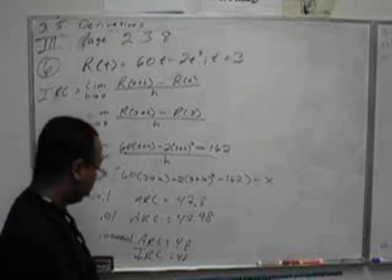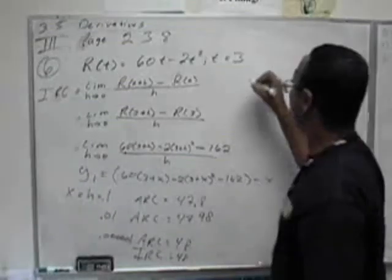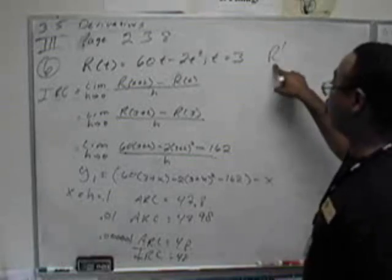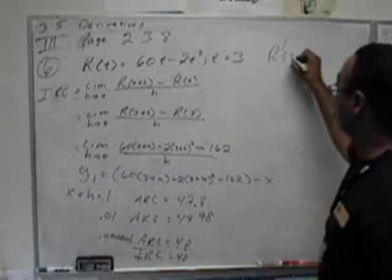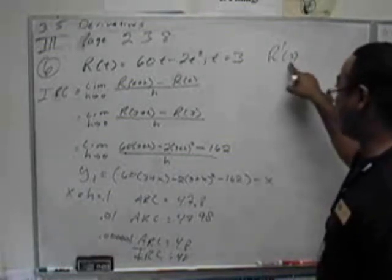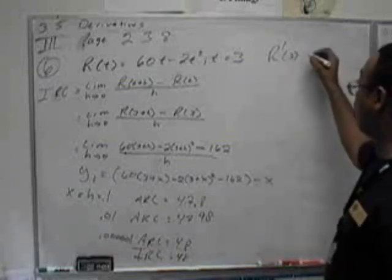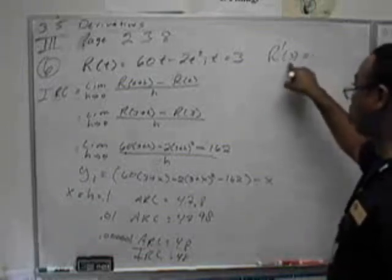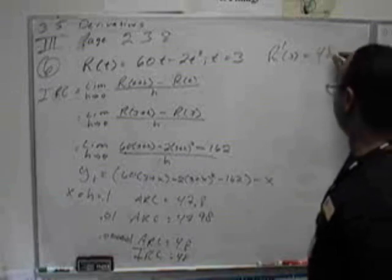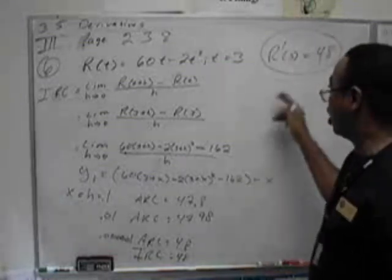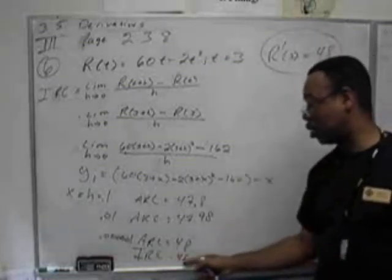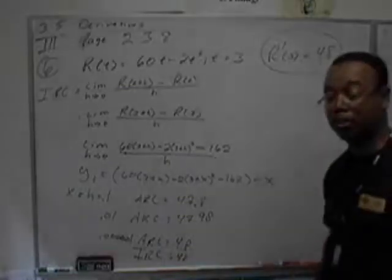Algebraically, we're saying that the derivative of r at 3, or the instantaneous rate of change of r at 3, will be 48. Again, this is finding the instantaneous rate of change.